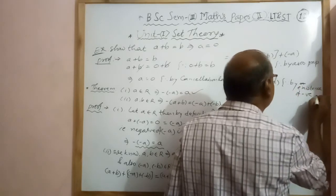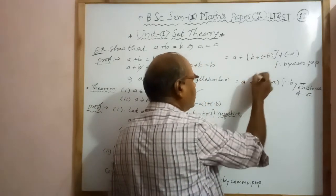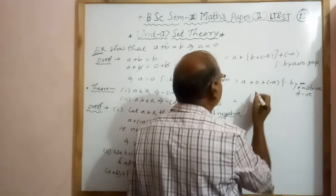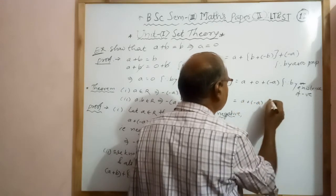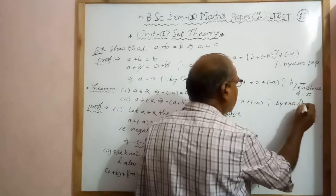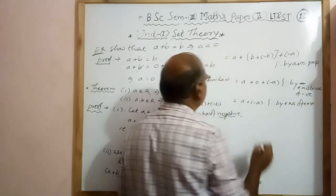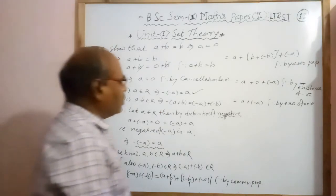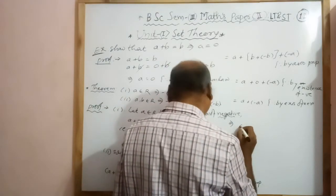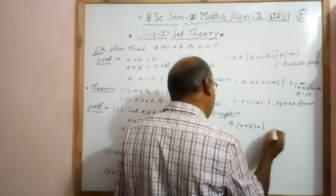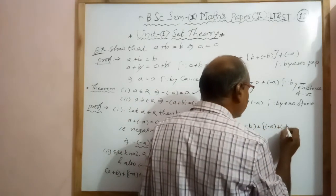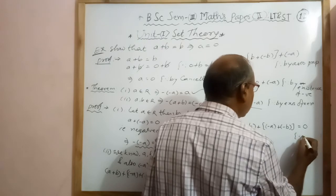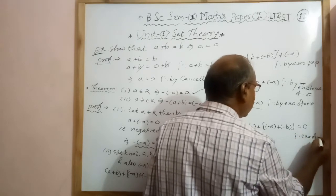Therefore, the left hand side A plus B plus minus A plus minus B equals 0, by the existence of the negative. Since minus B is the negative of B their addition is 0, and adding 0 to any real number gives the same number. So the entire expression A plus B plus minus A plus minus B equals 0.